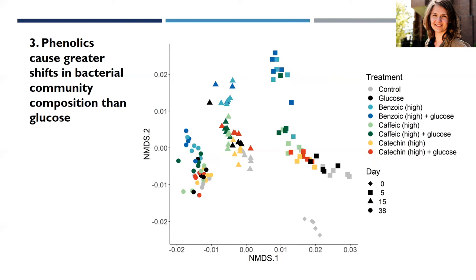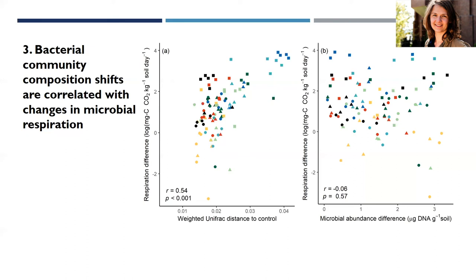Using experiment correlations — where I calculated the distance from individual data points to the control as a measure of community shift — I found a significant correlation between the shift in microbial community and the change in microbial respiration, while there was no significant correlation between microbial abundance and microbial respiration. This supports the community shift, rather than abundance, as the key mechanism.